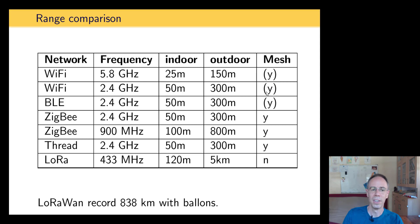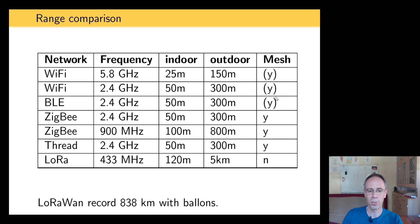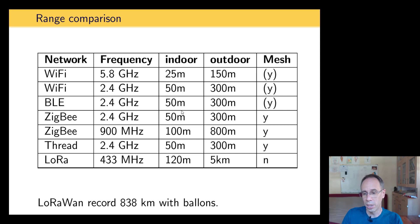You can extend Wi-Fi range through mesh, but it's quite new and requires setup, so it's not really built for mesh — but it is possible. The same counts for Bluetooth; there's also Bluetooth mesh, which is not a 100% mesh network because it just forwards all messages, creating a lot of traffic. Still, we have a range of around 50 meters indoor and 300 meters outdoor.